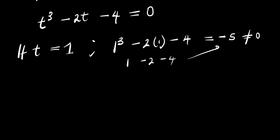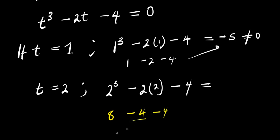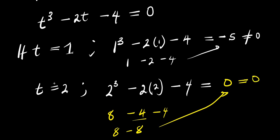When t equals 2, we are simply going to have 2 to the power 3 minus 2 times 2 minus 4. Now, 2 cubed is 8, minus 2 times 2 is minus 4, minus 4. So we have 8 minus 4 minus 4, that is 8 minus 8, and this gives us 0. So that means t equals 2 is one of the solutions.